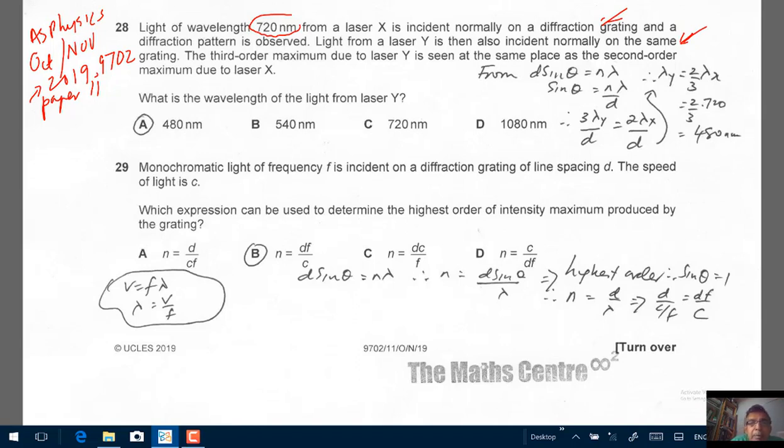The third order maximum, so in your mind n equals to 3 when you use the diffraction grating formula. The third order maximum due to laser Y is seen at the same place, the angle is the same, as a second order maximum due to laser X. So here we have n equals to 3, here we have n equals to 2 and same place therefore your angle is going to be the same. What is the wavelength of the light from laser Y?